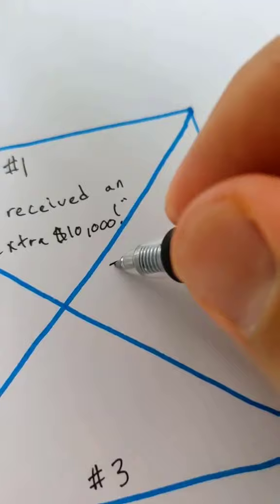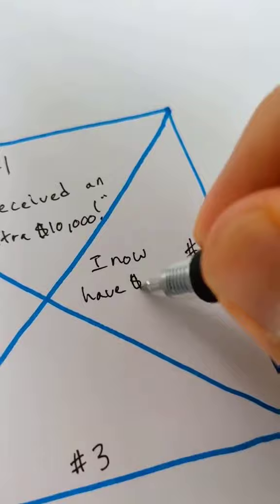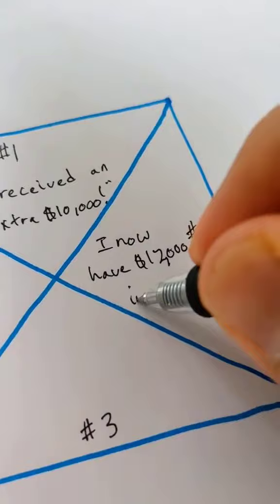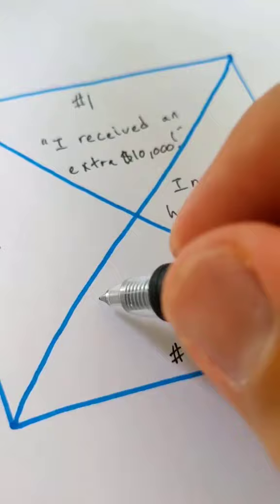And in section number two, you're going to write down an end scene, something that would happen as if this were actually really manifesting into your life. We're going to write down the example. I now have $12,000 in my account. So for example, if you already had $2,000, you're adding in $10,000 and you get $12,000.